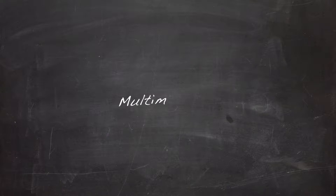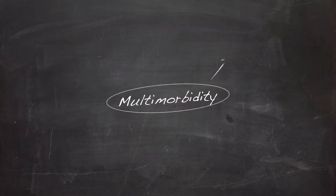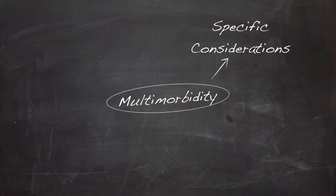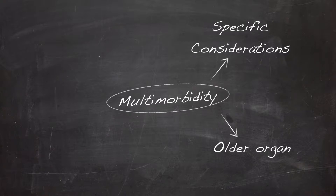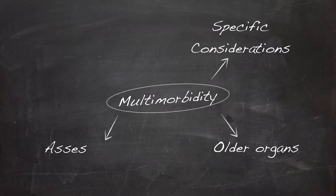In this chapter on multimorbidity, we will first look at the specific issues encountered when assessing the older patient perioperatively. We will then take a structured approach as we explore age-related changes per organ system with the common pathology that is encountered. The organ-specific guidelines that can be followed in an attempt to assess and optimise the elderly patient will be provided.